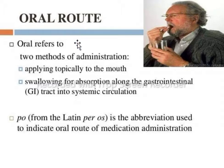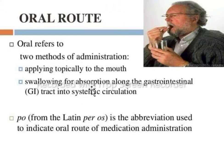In the oral route, we have two methods for drug administration: either the drug is applied topically without swallowing, or the drug is placed in the mouth and swallowed for absorption through the gastrointestinal tract into systemic circulation. Remember that in this route, first pass effect is involved. PO is the Latin abbreviation used to indicate the oral route for drug administration.